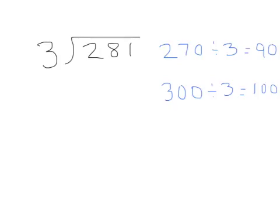If you increase the dividend to make compatible numbers, then your estimate will be greater than the actual. If you decrease the dividend to make compatible numbers, the estimate will be less.